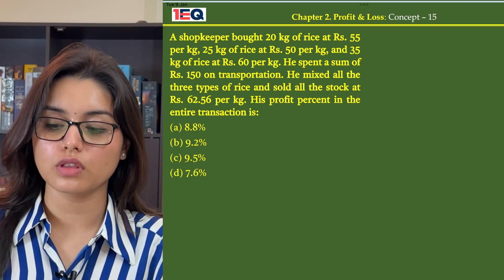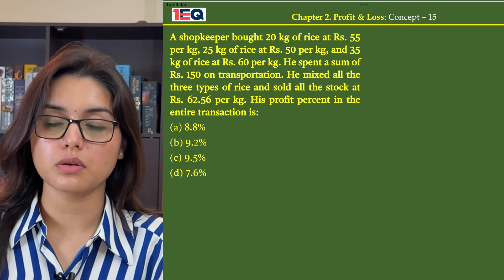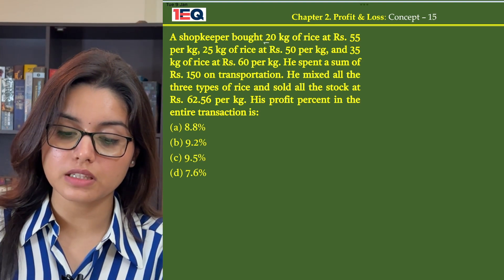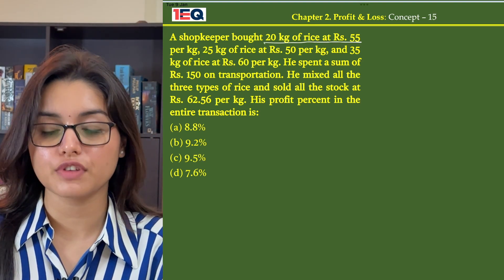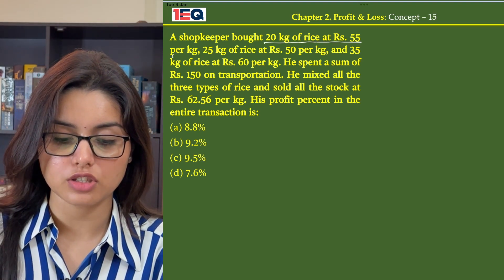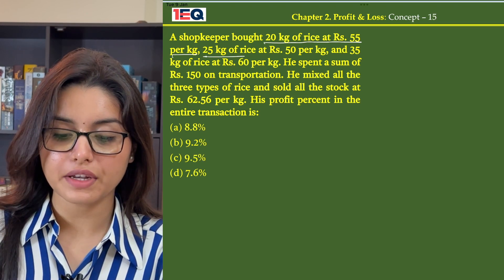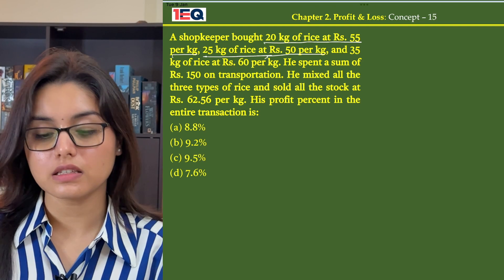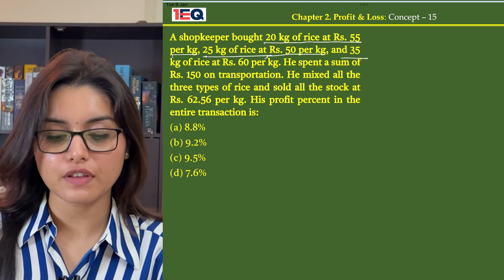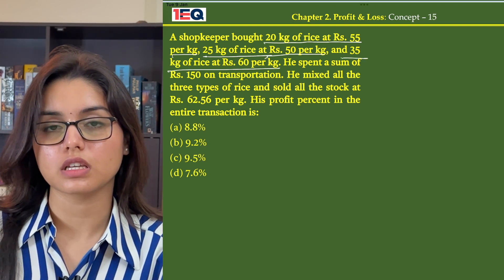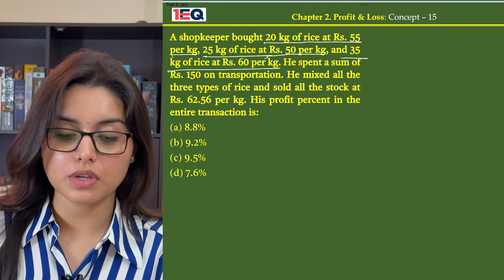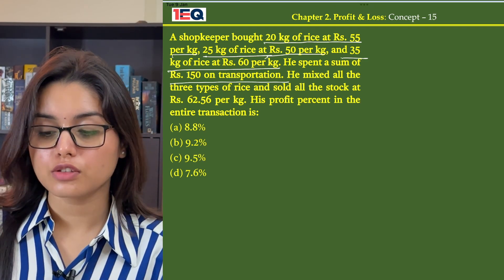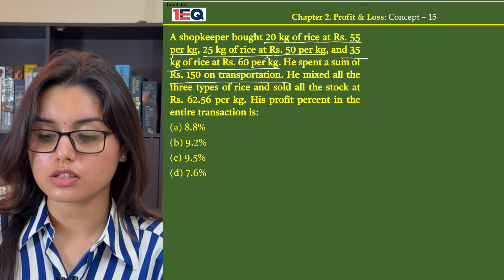In the given question, we know that the shopkeeper buys 3 different types of rice. The first being 20 kg of rice at Rs 55 per kg, the second being 25 kg of rice at Rs 50 per kg, and the last is 35 kg of rice at Rs 60 per kg. He then spends Rs 150 on transportation. So first, let's find the total cost price.